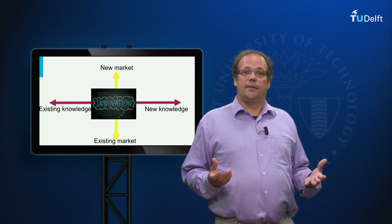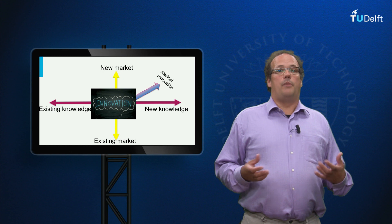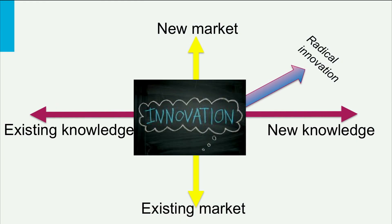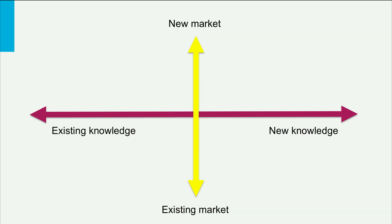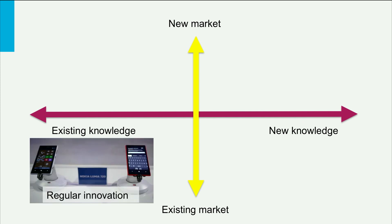Radical innovation typically is aimed at new markets and at new knowledge. If we combine these two axes, we have four quadrants, as shown on this slide. First, we have regular or incremental innovation, which builds on existing knowledge and aims at existing customers. A typical example is the new model of a mobile phone, like those developed every year or so.